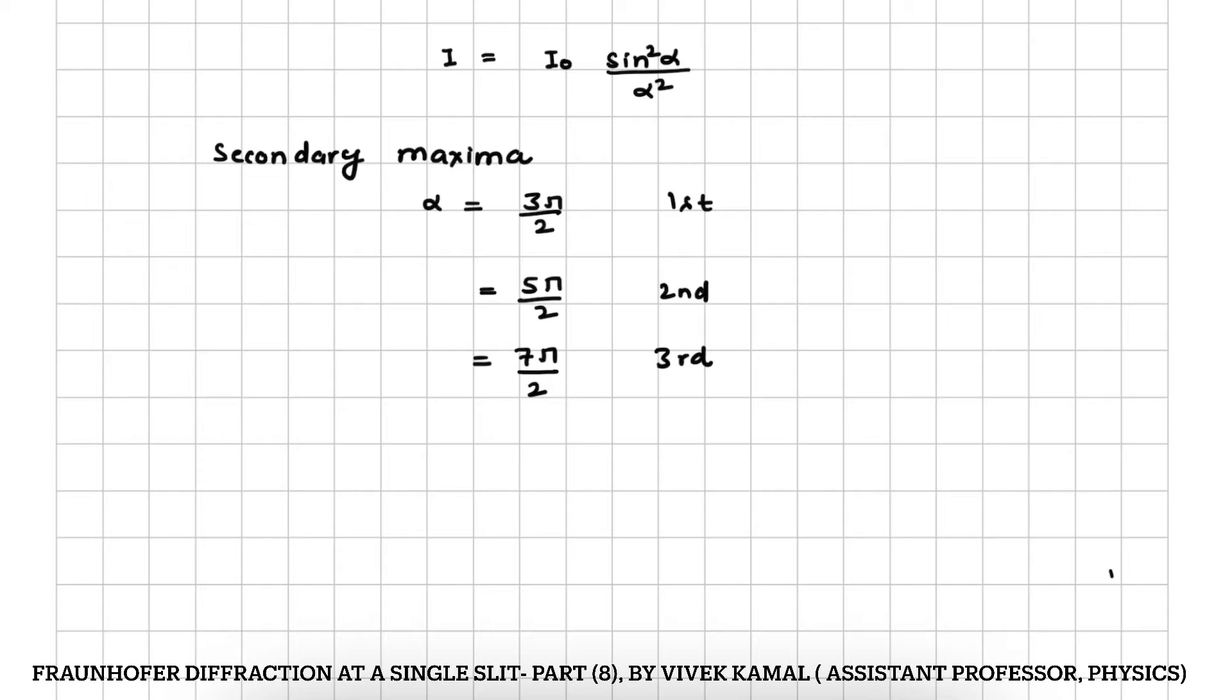Now intensity of first secondary maxima is equal to I0, sin 3 pi by 2 square divided by 3 pi by 2 square. Sin 3 pi by 2 is equal to 1.